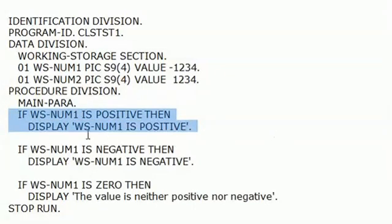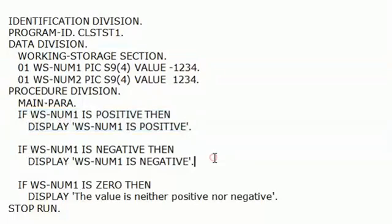Here I am validating the sign value. If WS-NUM is positive, then I am displaying 'WS-NUM is positive'. If WS-NUM is negative, then I display 'WS-NUM is negative'.